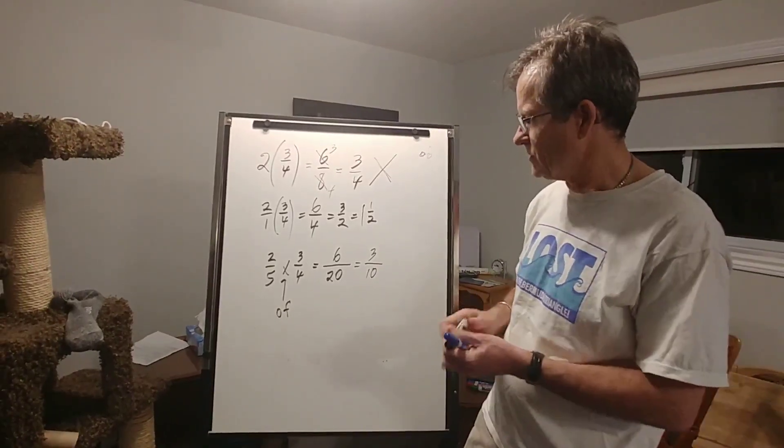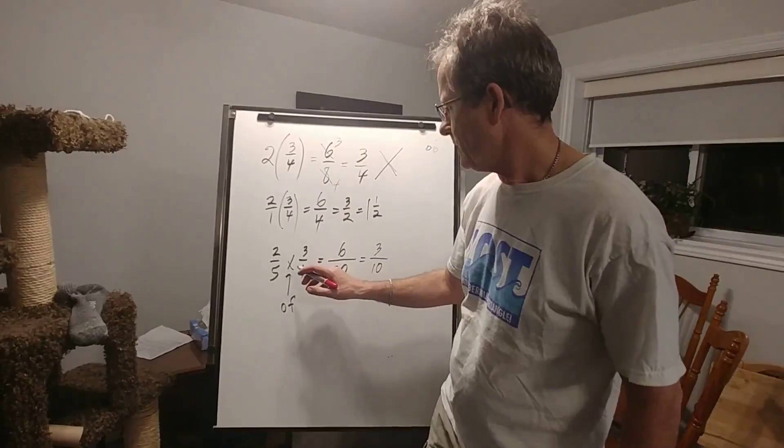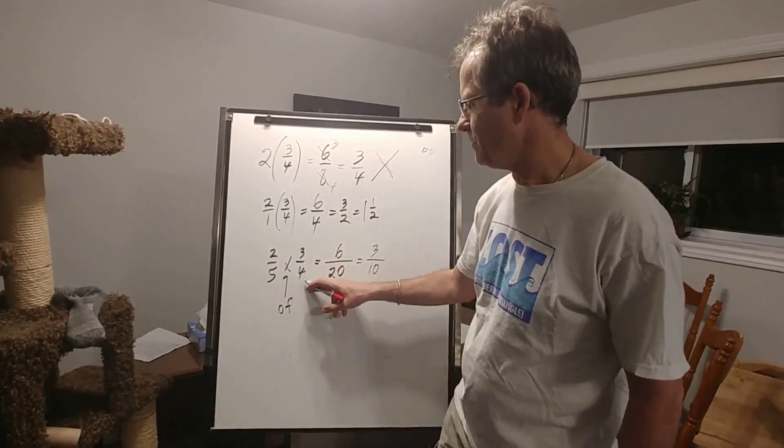Now I could have made it a little bit easier if before multiplying I reduced some of these numbers. Anything on the top can reduce with anything on the bottom.